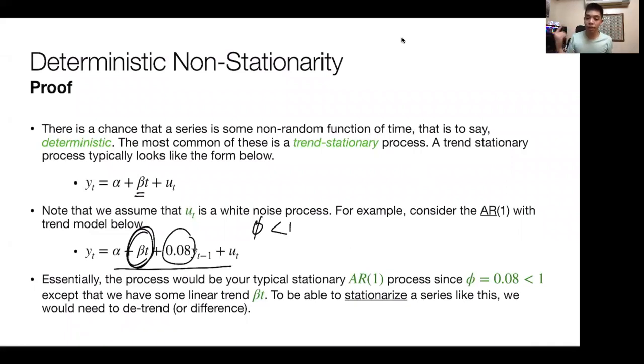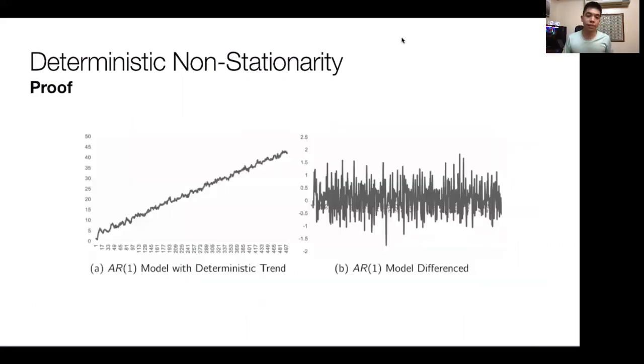To be able to stationarize a series like this, we would need to detrend the series or maybe potentially just difference it. This is basically a graphical representation. If you have an AR1 model with a deterministic trend, that's that beta t term there, then it just goes up in time, depending on time. But if we difference it, it becomes more a stationary series. You see that the mean is now roughly equal to zero.